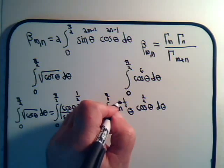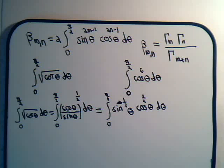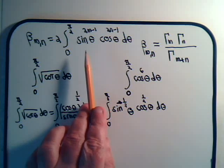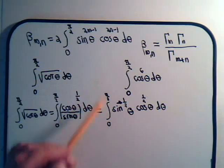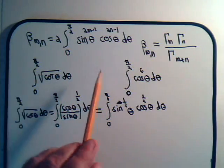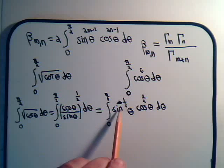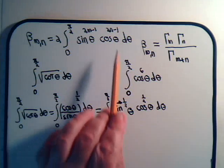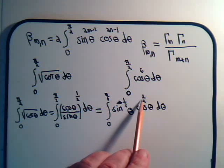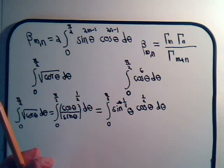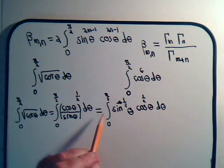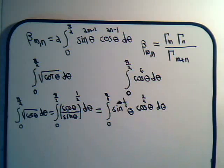Note that the exponent on sine θ is a minus sign, minus one-half. Let's compare this now to our beta function. The limits are 0 to π/2. The sine of θ is raised to the power minus one-half, and the cosine of θ is raised to a different exponent. It has everything it needs except for the factor of 2 in front.